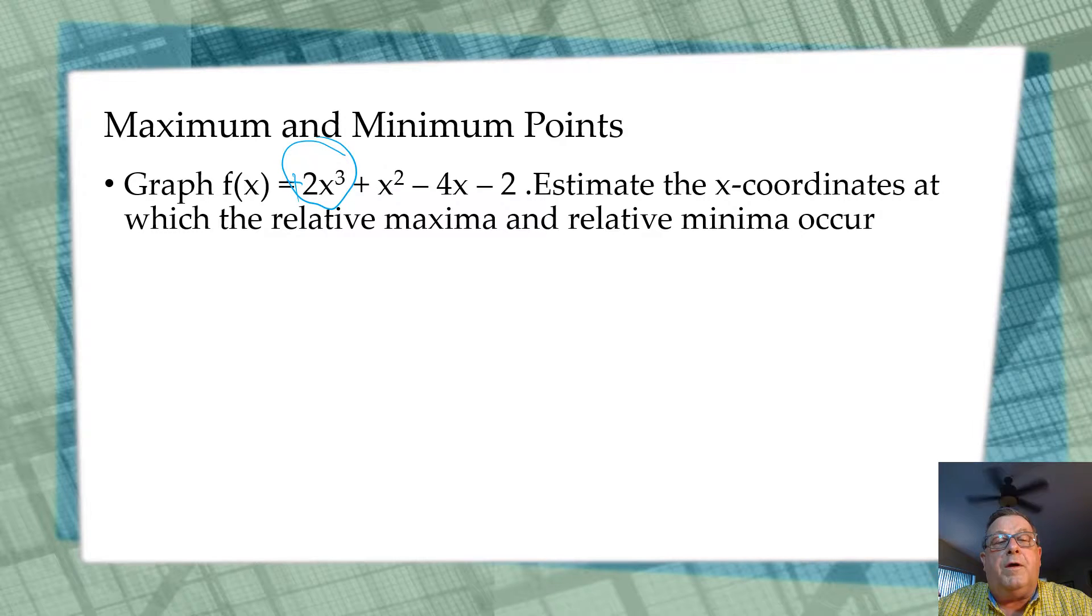Also, we could have as many as three possible zeros because we have x³, and we're going to have two turning points. It's at those turning points that we can have a maxima and a minima occur.